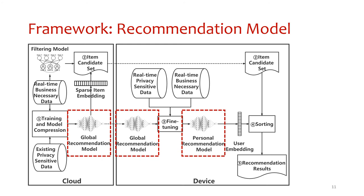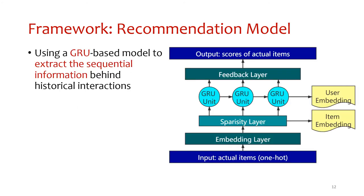Next, we introduce the recommendation module. We use a GRU-based neural network to model the sequential information behind historical interaction behaviors and extract user embeddings. The input of the module is a sequence of interacted items in one-hot encoding, which are projected into low-dimensional dense embeddings through the embedding layer. To reduce network overhead, the dense embedding is then passed into a sparsity layer, after which the sequence of item embeddings is passed into one or several GRU layers.